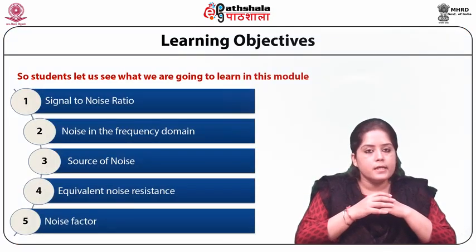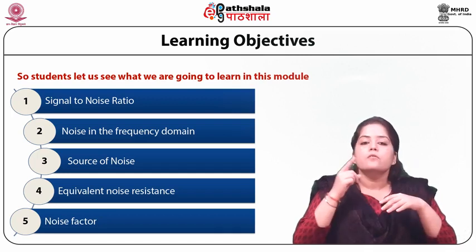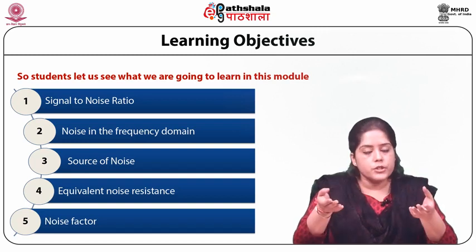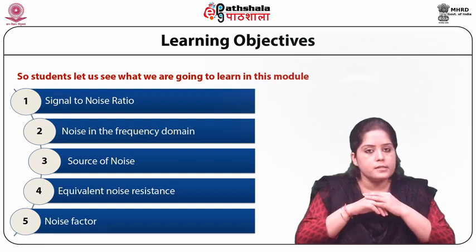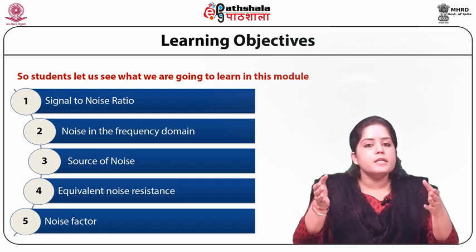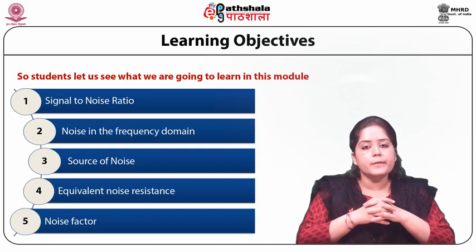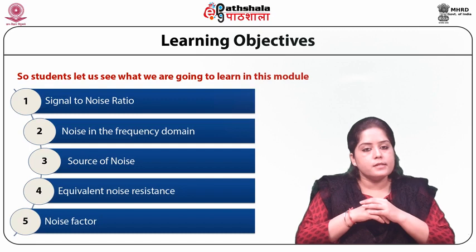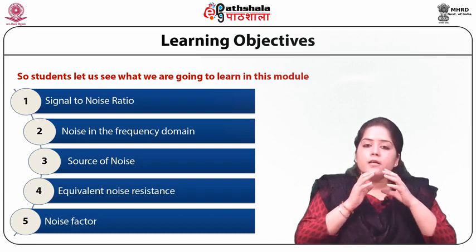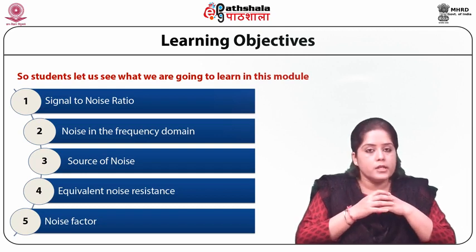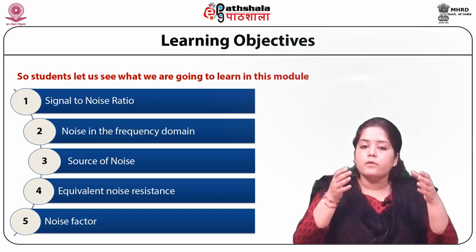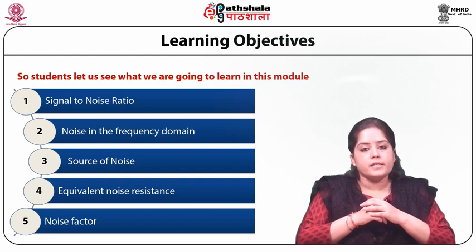Let us see what we are going to learn in this module. First, we will discuss about the signal to noise ratio — its definition and significance. Second, the noise in the frequency domain will be discussed. Thirdly, various types of sources of noise will be discussed. Next, the equivalent noise resistance, which is the important factor in determining the SNR, will also be discussed. Lastly, the noise factor. We will also discuss about the amplifiers in cascade — how the S/N propagates in this case — and how to enhance the signal to noise ratio.